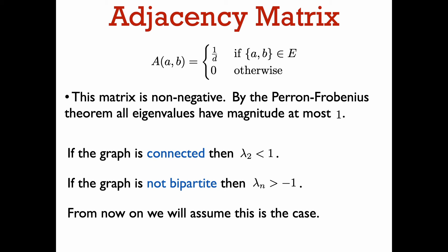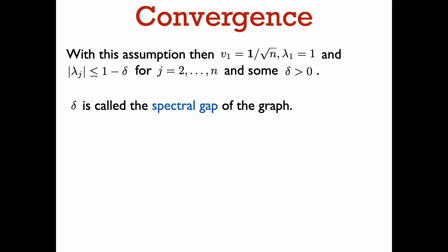It is known that the eigenvalues can actually tell us more about the graph. If the graph is connected, then the second largest eigenvalue must be strictly less than 1. And if the graph is not bipartite, then the least eigenvalue will be strictly greater than negative 1. From now on, we will assume that the graph is not bipartite and is connected. With these assumptions, the all-one eigenvector is the sole eigenvector with eigenvalue of magnitude 1, and all other eigenvalues are strictly smaller in magnitude. Suppose that the next largest magnitude of an eigenvalue is 1 minus delta; delta is called the spectral gap of the graph.